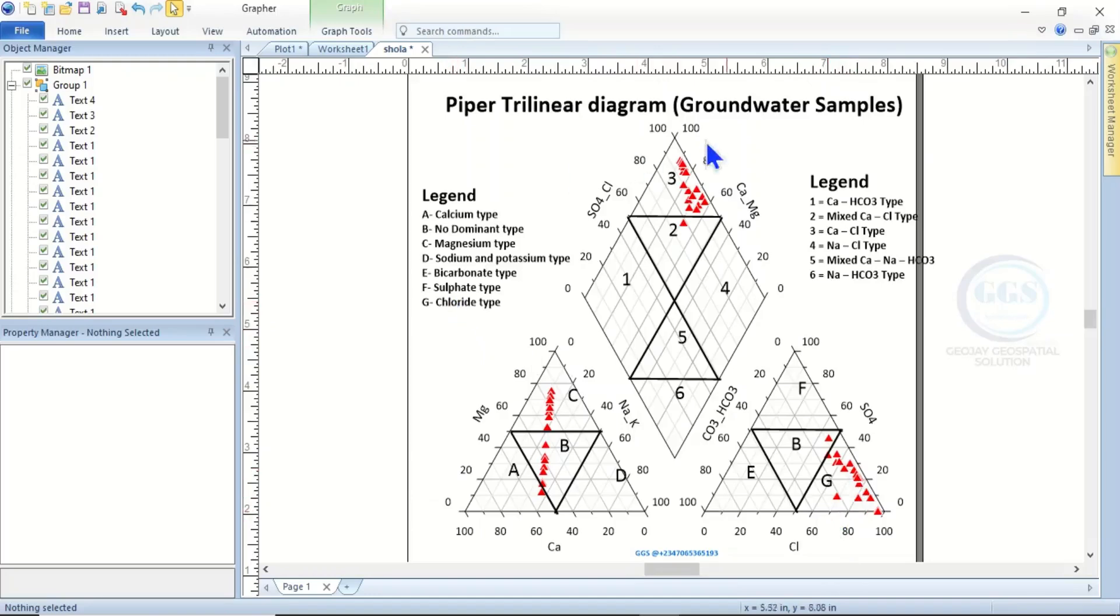Likewise, if you come to the diamond area, you can see that most of the samples fall here. So this is how to interpret the Piper trilinear diagram for your groundwater samples. Remember that, for example, magnesium is at 100 here and zero here, so as you're moving up, the magnesium value is increasing. This is how to interpret your Piper trilinear diagram. Thank you for watching.